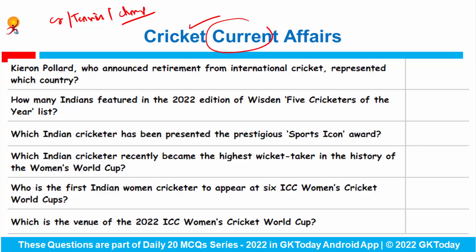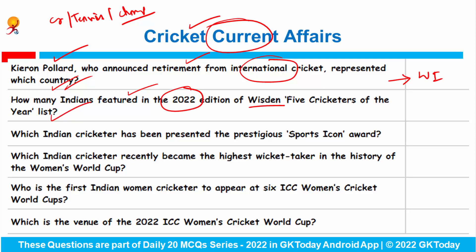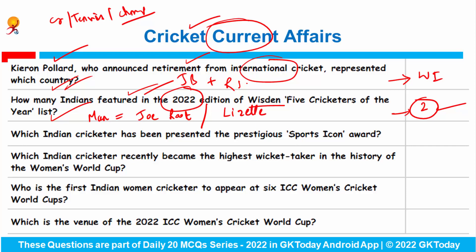Kieron Pollard, who announced his retirement from international cricket, represented West Indies. In the 2022 edition of Wisden's Five Cricketers of the Year list, two Indians featured: Jasprit Bumrah and Rohit Sharma. The leading male cricketer in the world in this list was Joe Root. The leading female cricketer in the world is Lizelle Lee, and the leading T20 cricketer in the world is Muhammad Rizwan from Pakistan.